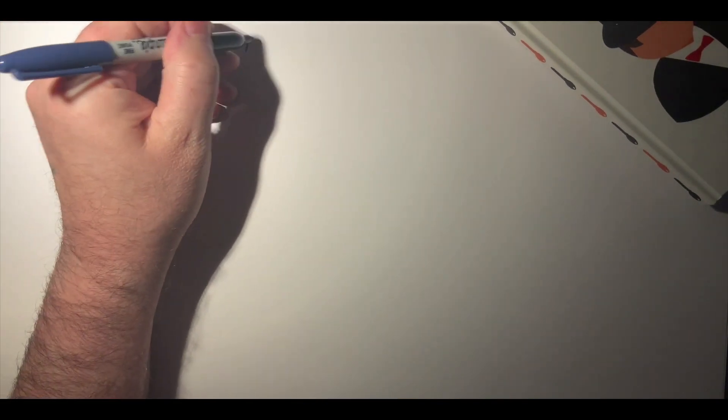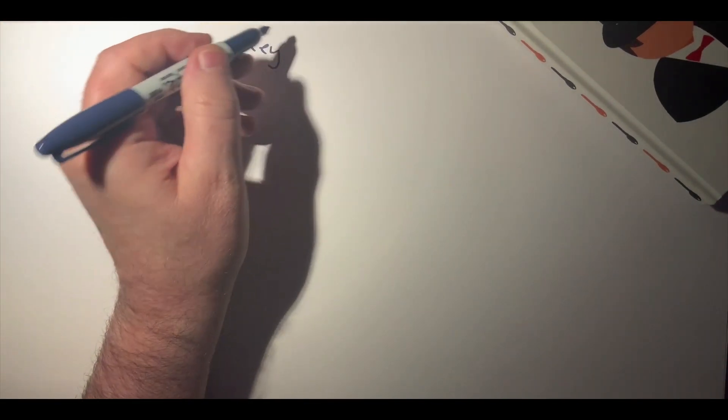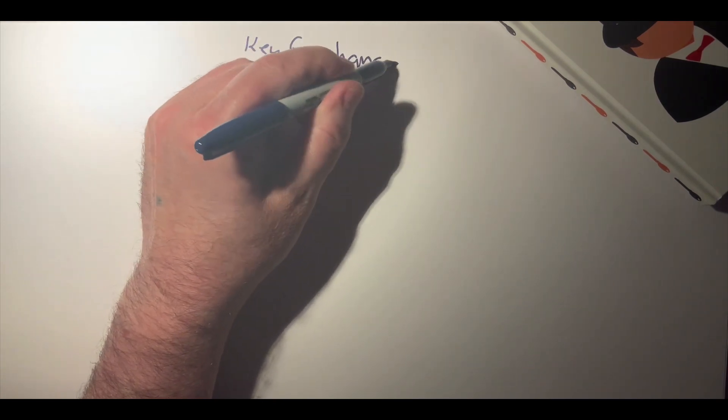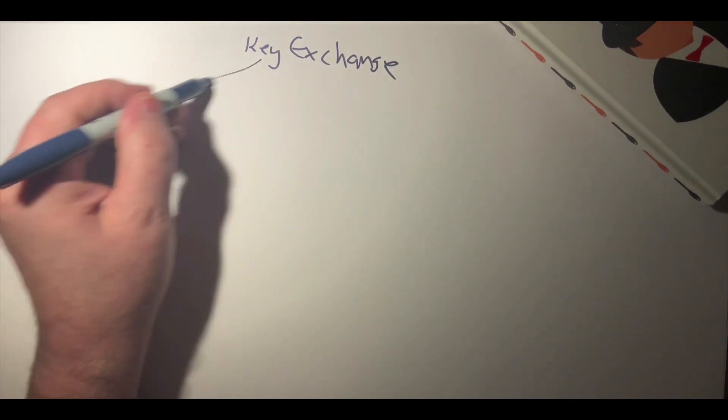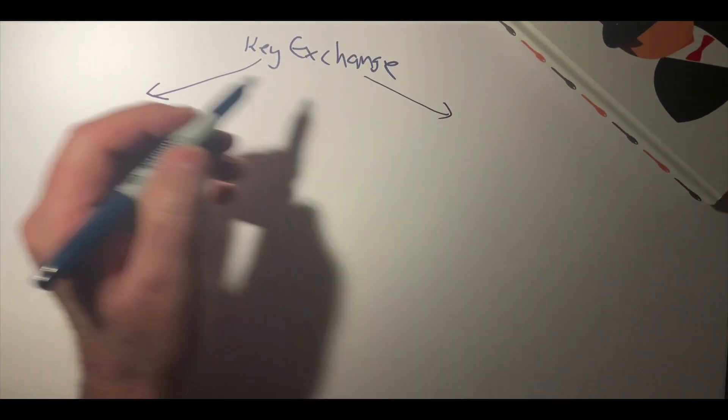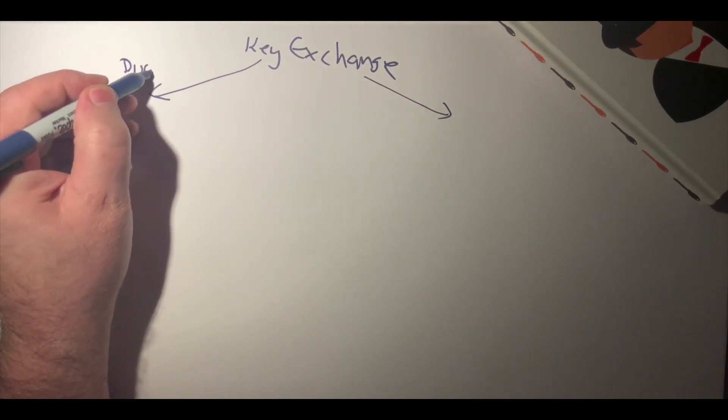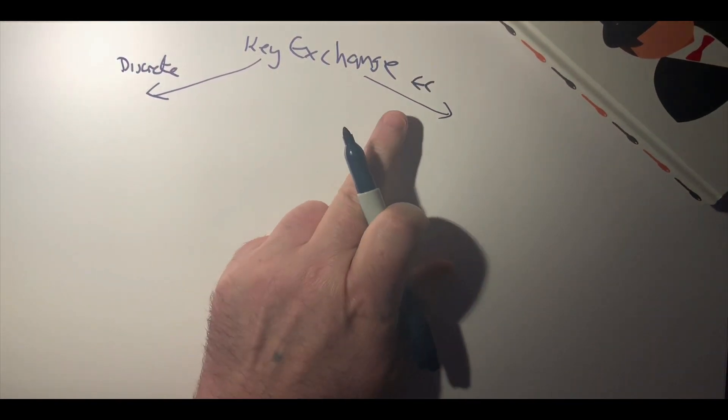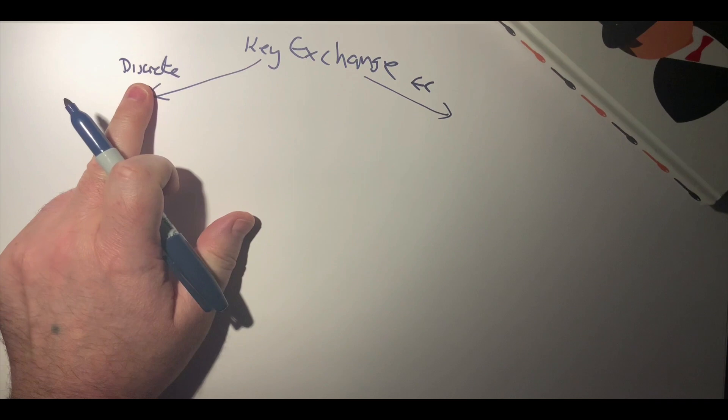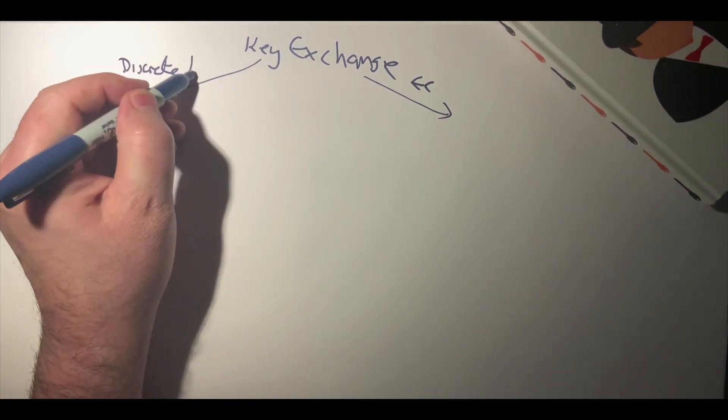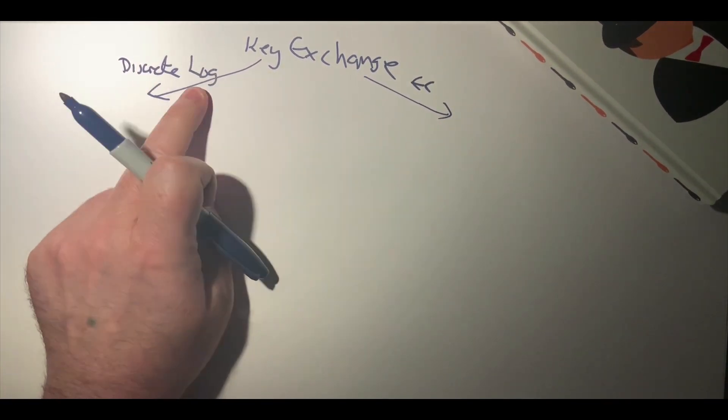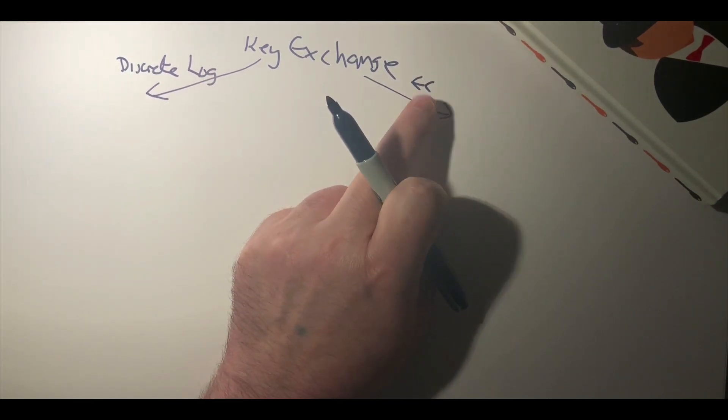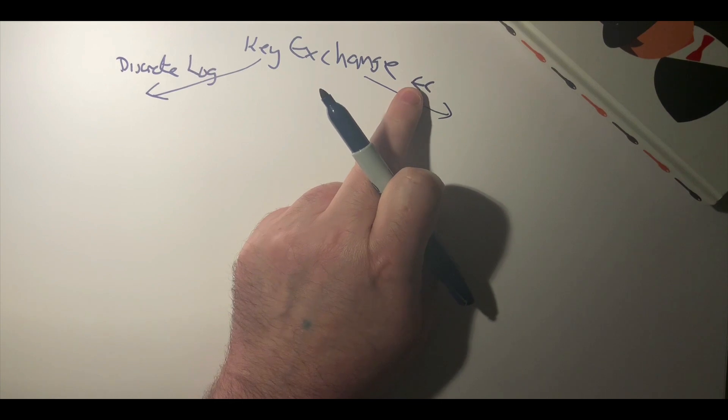Okay, let's look at key exchange methods. The two methods we'll look at are using discrete logs and elliptic curve methods. This was the original method used in creating key exchange, and this is the method that's most likely to be used these days.